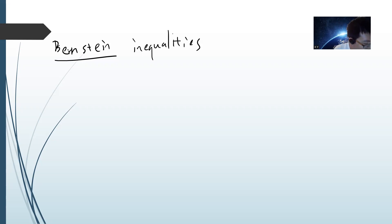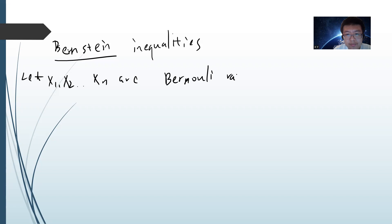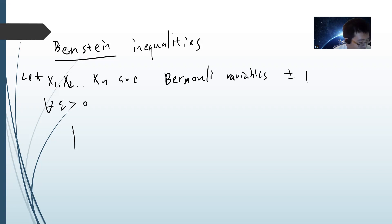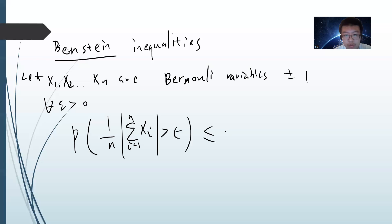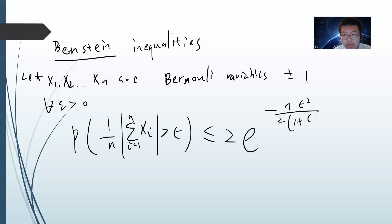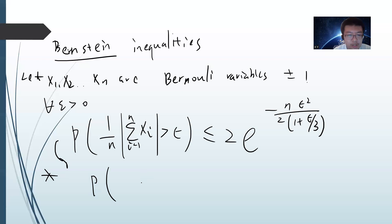So the setting is that x1, x2, up to xn are binary variables — binary variables with plus or minus one, so each one is either plus one or minus one. For every epsilon greater than zero, the probability that one over n times the sum from i equals one to n of xi is greater than or equal to epsilon is less than or equal to two times exponential of minus n times epsilon squared over two, divided by one plus epsilon divided by three. So basically we only bound one side.